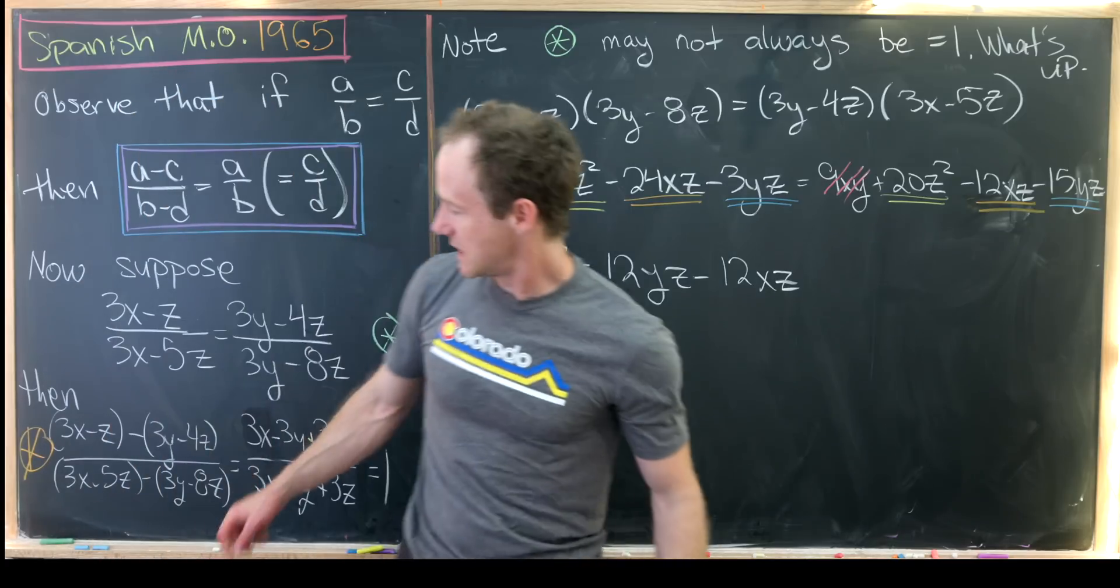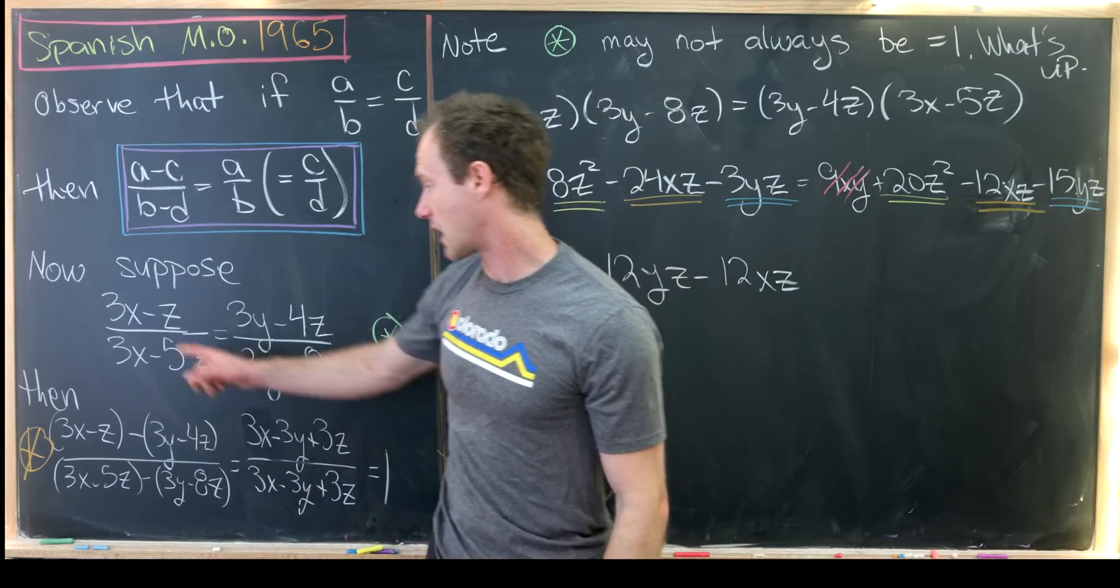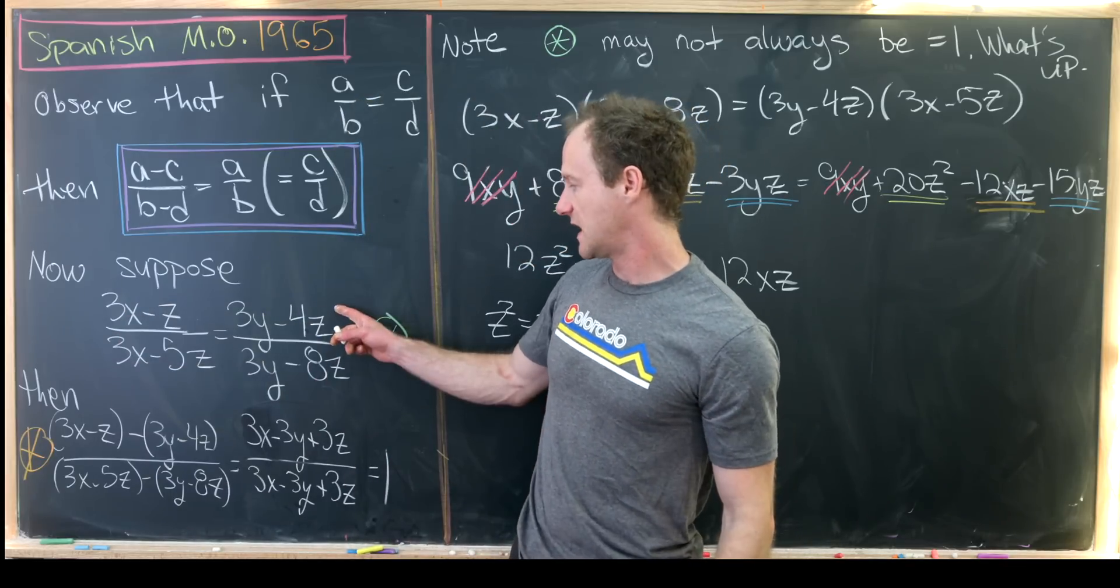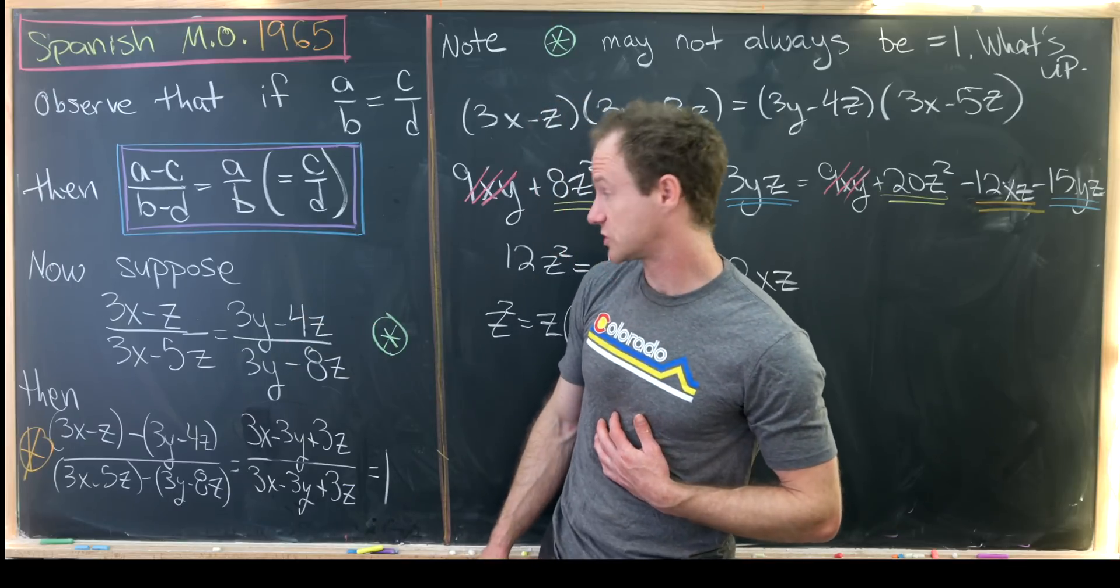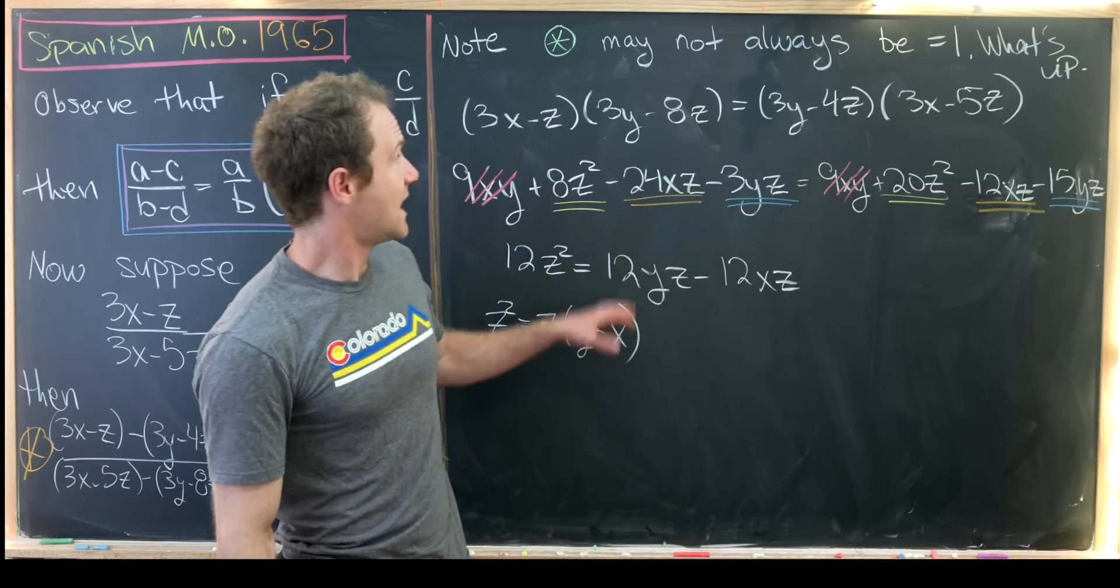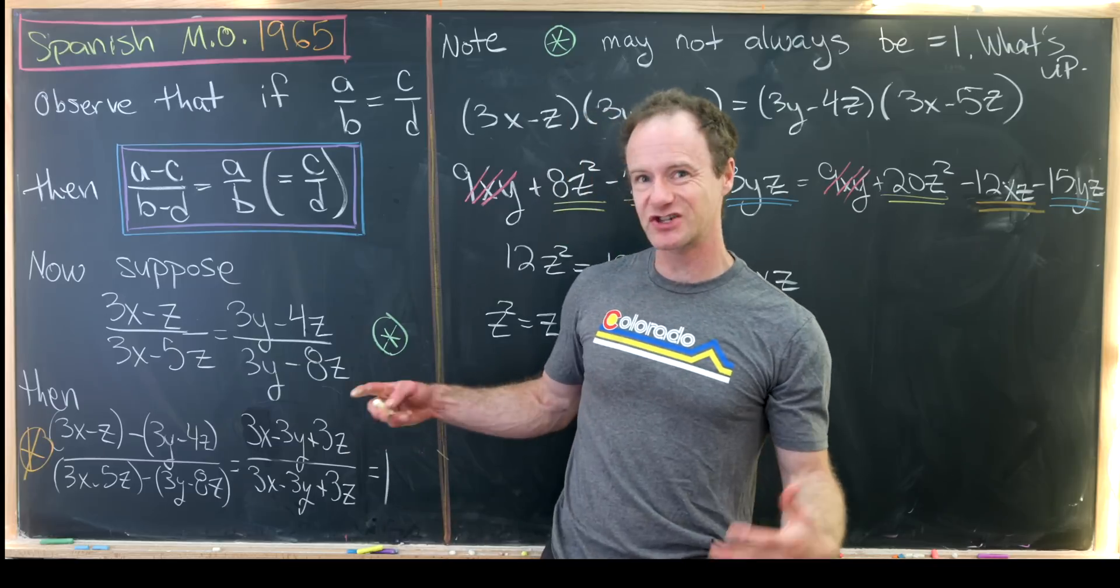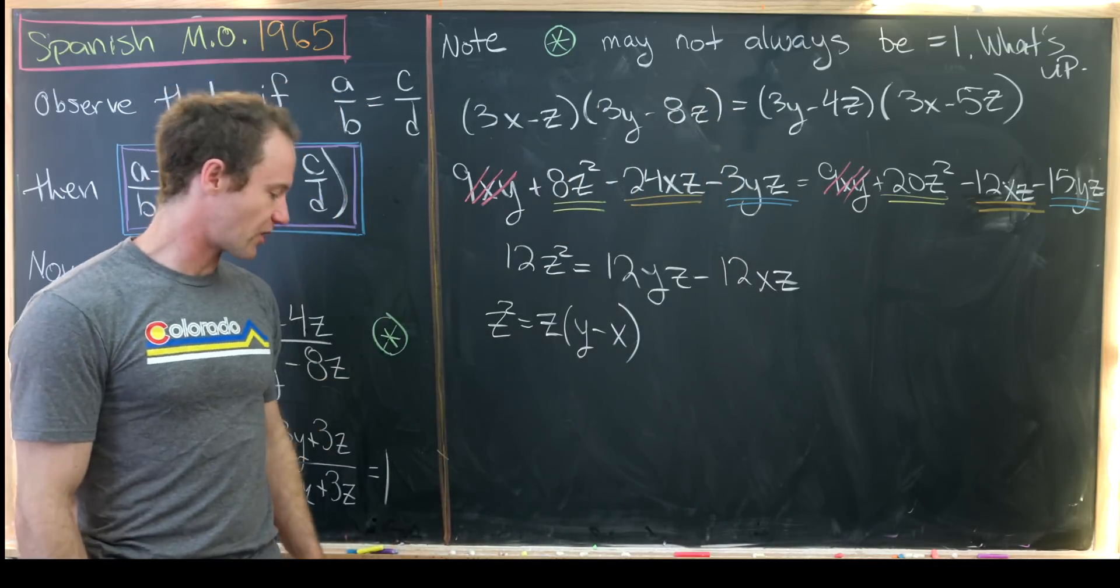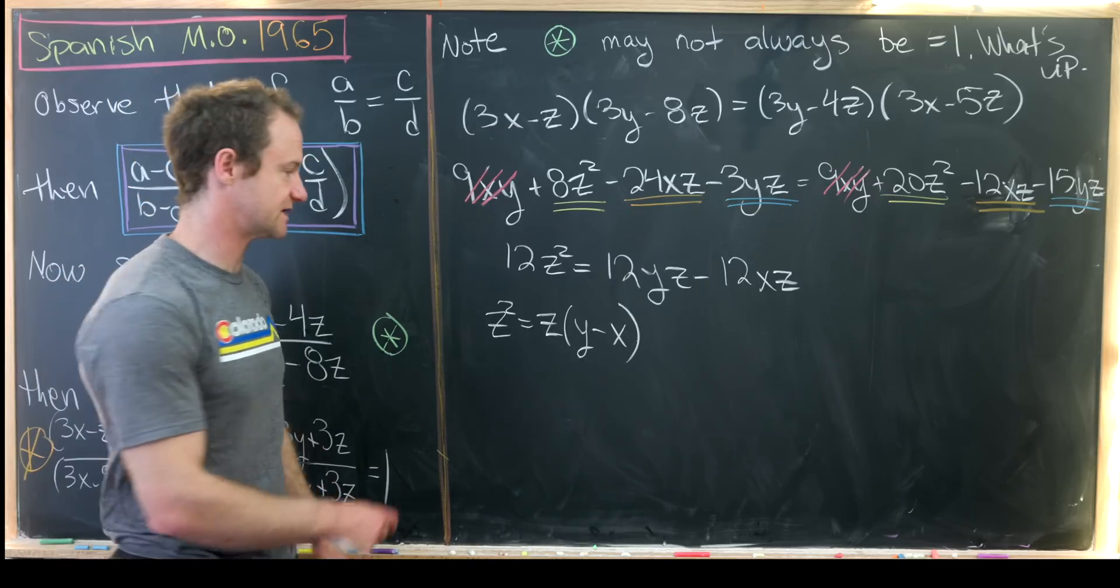Well, let's look over here in the original fractions. When z is equal to 0, our left hand side is 3x over 3x, which is 1. Our right hand side will be 3y over 3y, which is also equal to 1. But that means our original fraction is equal to 1. So there's actually no problem here where z is equal to 0. So the only problem that occurs is when z is not equal to 0.